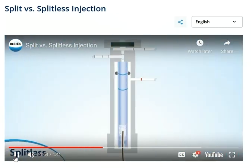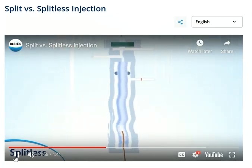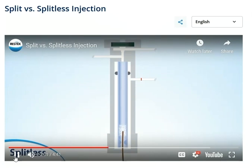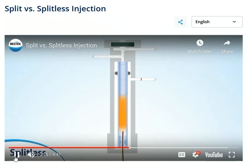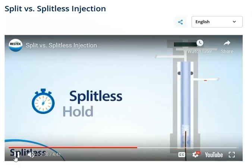Now let's look at an example of a splitless injection. In a splitless injection, the split vent is closed and left closed before and during the injection. As there is no split flow, the total flow is set at a dramatically reduced flow rate — here it's only 4 mils per minute. 3 milliliters per minute passed through the septum purge while the remaining 1 mil per minute entered the column. During injection, the sample remains within the liner for longer before entering the column due to the lower flow rate. Once sufficient time has elapsed after injection, the split vent opens to purge the inlet. This duration, known as the splitless hold time, is calculated to be long enough to allow the maximum vaporization and transfer of analytes to the column.